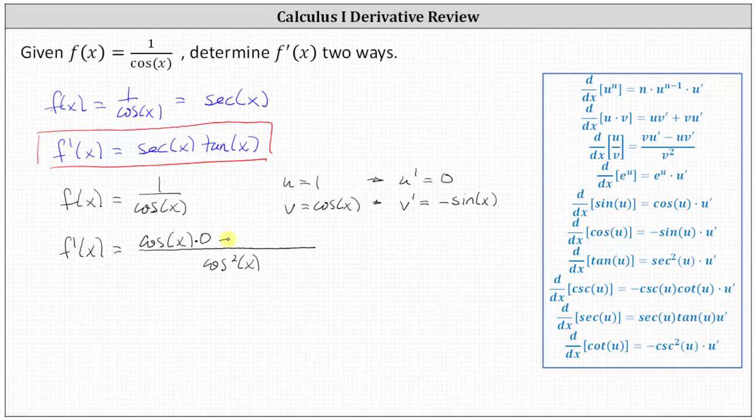and then minus u, which is the numerator, times v prime, which is the derivative of the denominator, which is negative sine x.